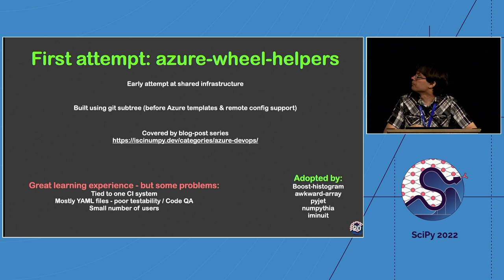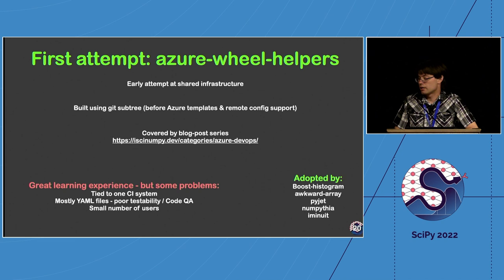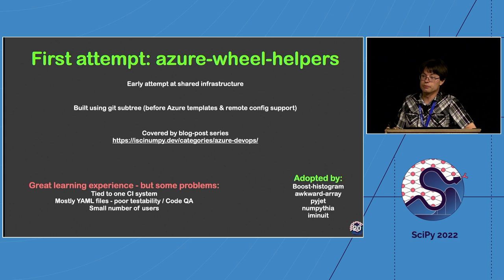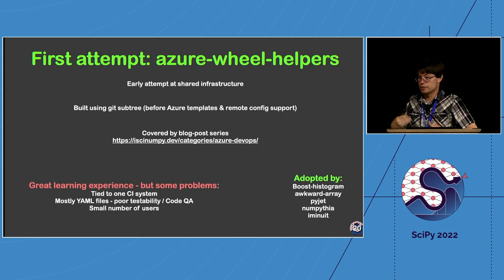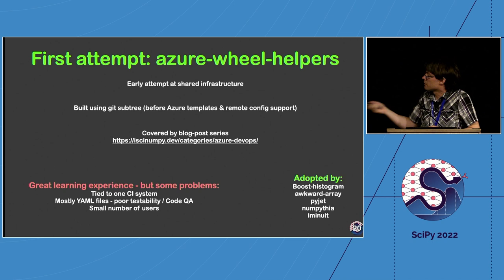The first attempt was a package called azure-wheel-helpers, designed around the then brand-new Azure Pipelines platform. This was a great learning experience — there's a series of articles about how this works that still explain the complexities of building redistributable wheels. But we ran into problems: it was heavily tied to one CI system, mostly written in YAML files, and had a relatively small number of users, though we did move our five binary packages over to it.